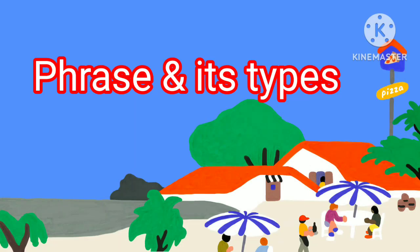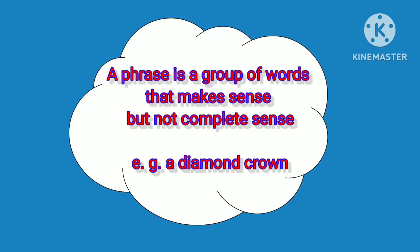Phrase and its Types. A phrase is a group of words that makes sense but not complete sense. Take the example: a diamond crown. This is a phrase. Why is this called a phrase? Because it is a group of words — it gives meaning but not complete meaning. That's why this is a phrase.